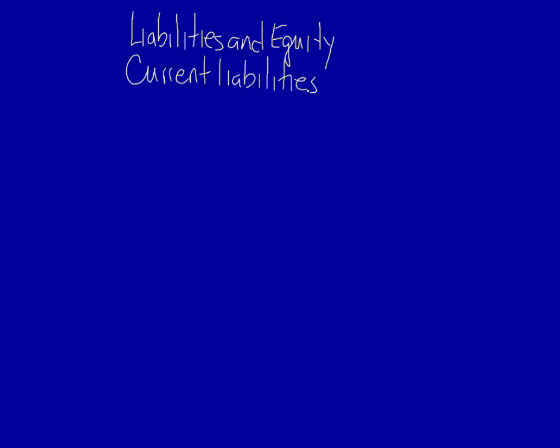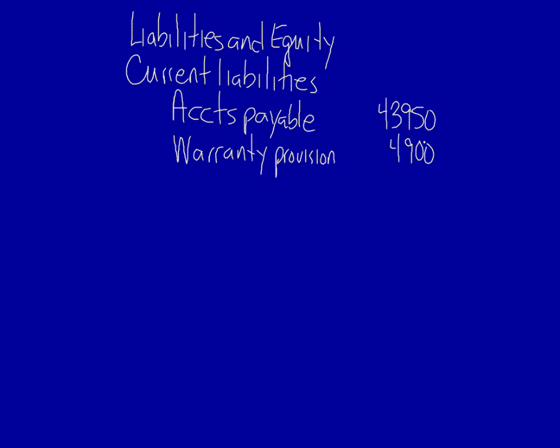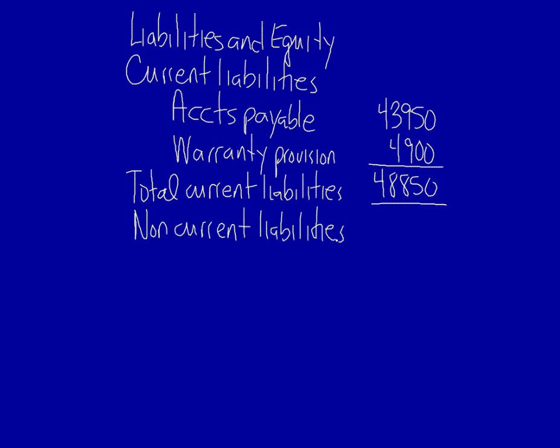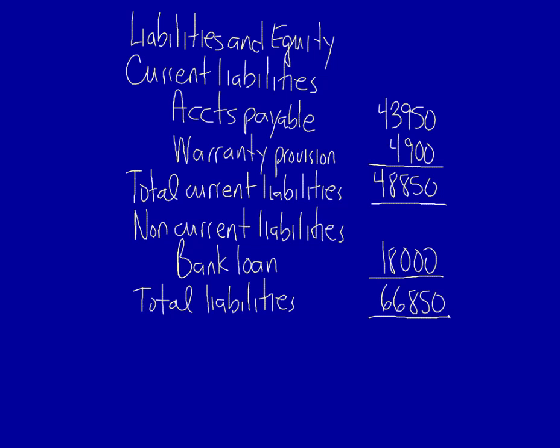Now let's move on to liabilities and equity. Start with the heading 'liabilities and equity,' then current liabilities. List accounts payable first, because accounts payable will most likely be settled before the warranty provision. Then list the warranty provision, followed by a subtotal called total current liabilities. Moving on to non-current liabilities: bank loan. Notice that if there is only one item under a subheading, you do not need to place a total — I don't need 'total non-current liabilities' here. Last subtotal: total liabilities. If there had been no non-current liabilities at all, I could have omitted total liabilities — the only required subtotal would be total current liabilities.